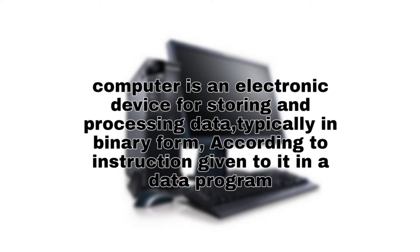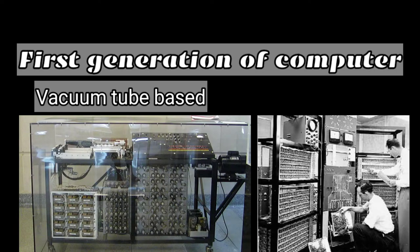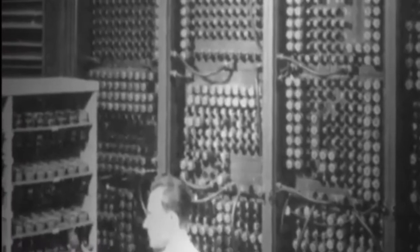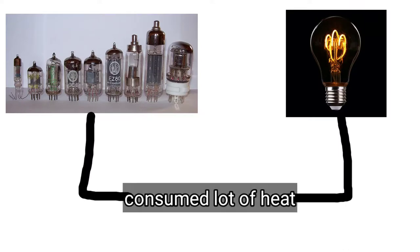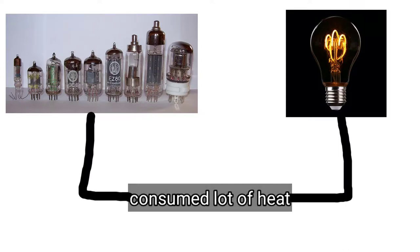The first generation of computers, vacuum tube-based, existed from 1940 to 1956. Computers of the first generation used vacuum tubes as the basic components of memory and circuitry for the CPU, or central processing unit. These tubes, like electric bulbs, produced a lot of heat, and insulation used to fuse frequently.